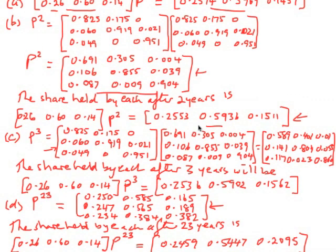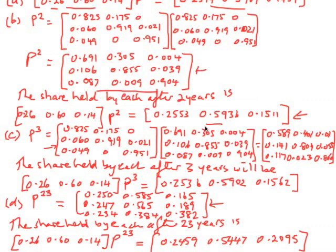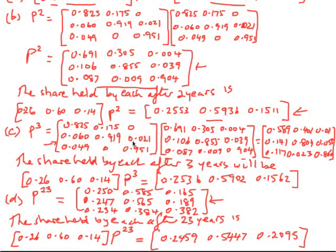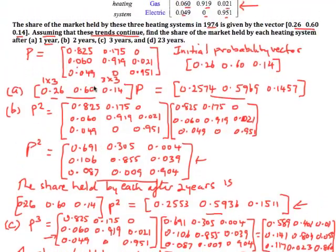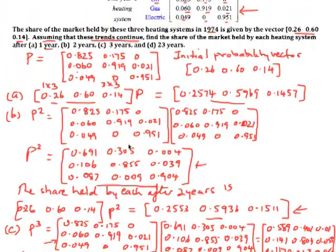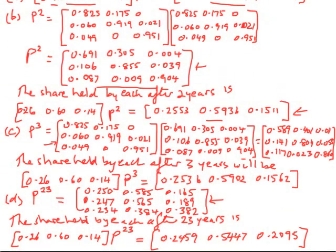That's how you work with a transition matrix, which is part of Markov chains. You need to make sure you're working out your matrix multiplication correctly and doing the arithmetic correctly so you can get the correct answer. Thank you.